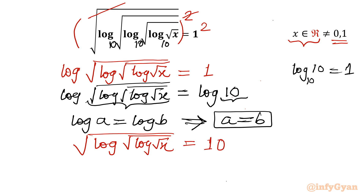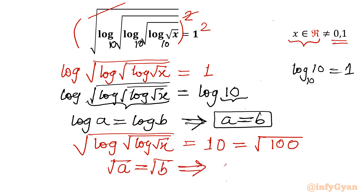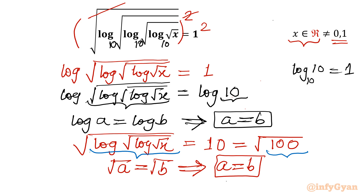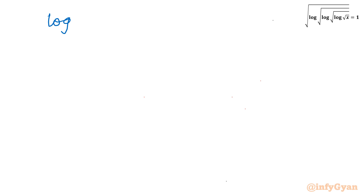Now 10 is square root of 100. Again square root something equals square root 100. So radicands should be equal to each other. The property is: if square root a equals square root b, then a must equal b. So this is our a value — log of square root, log of square root x — and this value is b. So I will write: log of square root, log of square root x, equals 100.